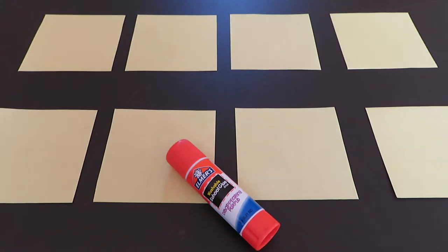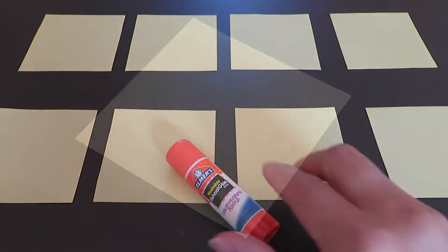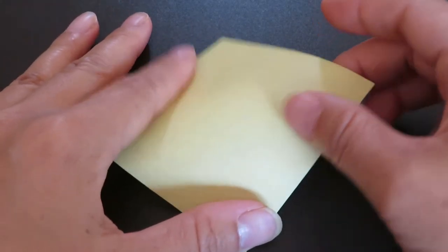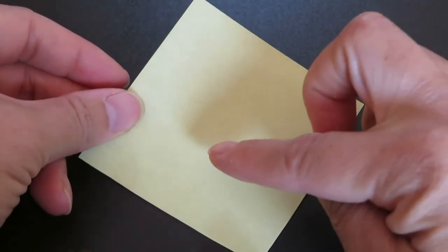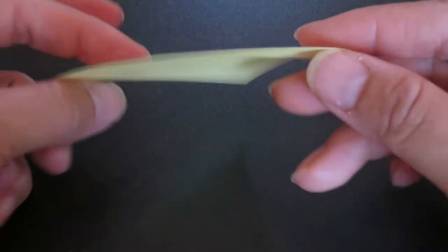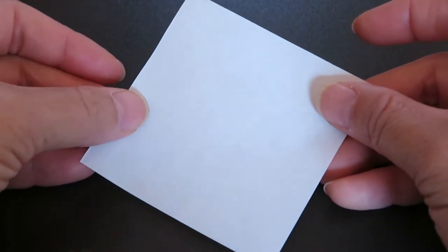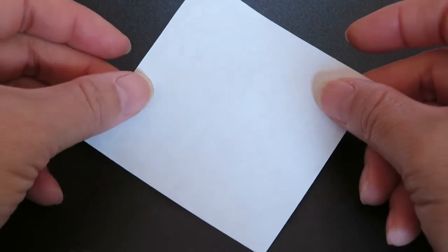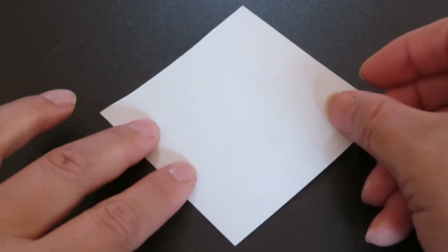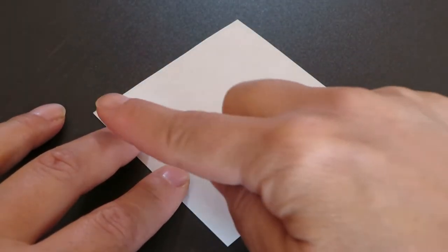Let's get started! First, take out one of the 8 origami papers. I picked a cream color, but you can use any color. Flip over the paper and keep white side up. Make sure corners come top and bottom.